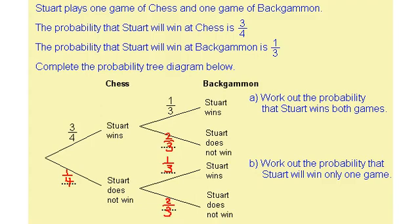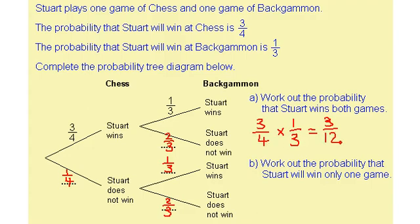I'm now asked to work out the probability that Stuart wins both games. I'm going to follow the branches — Stuart is going to win chess and then win backgammon. So it must be three quarters multiplied by a third. Three times one is three, and four times three is twelve, giving me three twelfths as my probability.